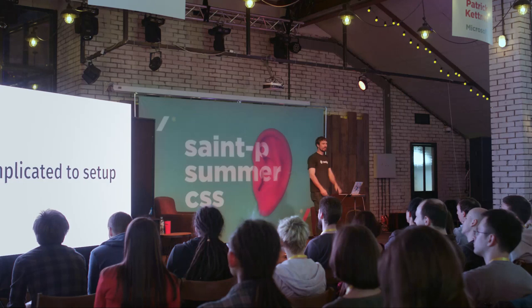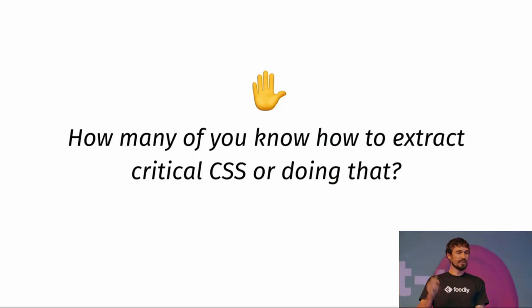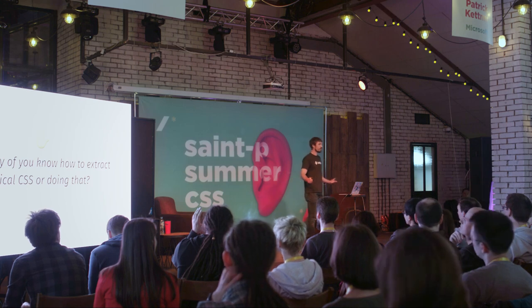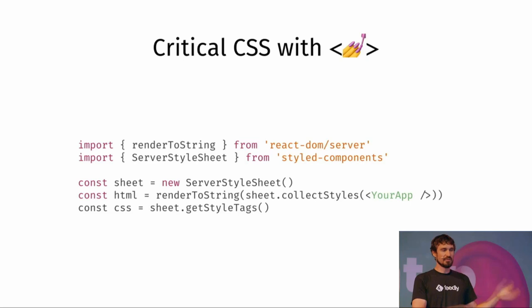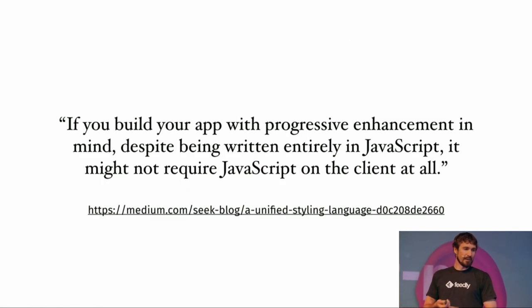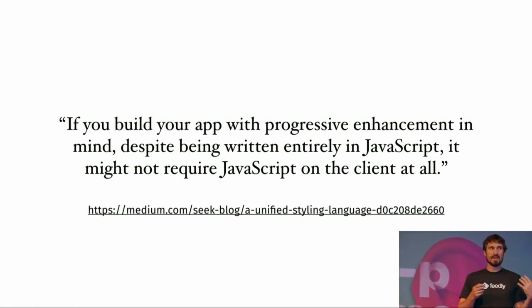The argument that it's too many tools — raise your hand if you know how to extract critical CSS or are doing so on your project. About five hands. I don't know either. Well, it's five lines with styled components now. You add these five lines to your project on server rendering and you get it. It's really well thought out. The thing is, if you build your app with progressive enhancement in mind, despite being written in JavaScript, it might not require JavaScript at all on the client. And that's a huge thing for me.